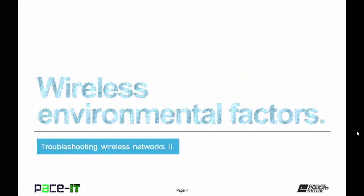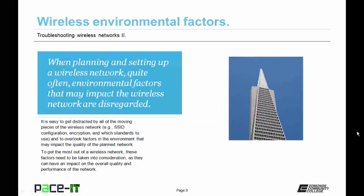I'm going to begin by talking about wireless environmental factors. When planning and setting up a wireless network, quite often environmental factors that may impact the wireless network are disregarded. It is easy to get distracted by all the moving pieces of the wireless network, as in the SSID configuration, encryption, and which standards to use. Dealing with these often leads to overlooking factors in the environment that may impact the quality of the planned network.